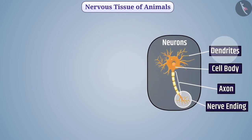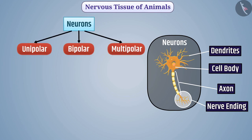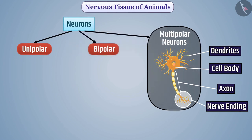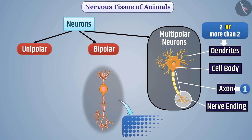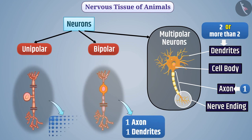On the basis of the number of dendrites and axons, neurons are classified into multipolar, bipolar, and unipolar neurons. In a multipolar neuron, there is one axon and two or more dendrites. In a bipolar neuron, there is one axon and one dendrite. In a unipolar neuron, there is only a cell body and one axon.